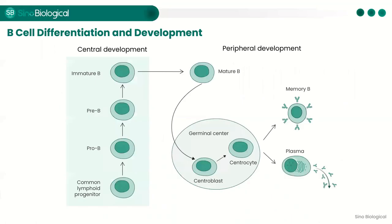B cells are the only immune cells in the body that can produce antibodies. B cell differentiation and development occurs in two distinctive stages. Development in the central immune organs follows a sequential process: common lymphoid progenitor cells to pro-B cells, to pre-B cells, followed by immature B cells, and then mature B cells. This process depends on the bone marrow microenvironment and involves gene rearrangement, BCR expression, and negative selection.